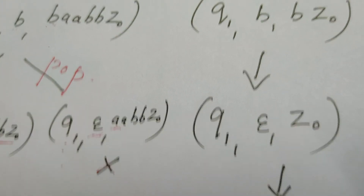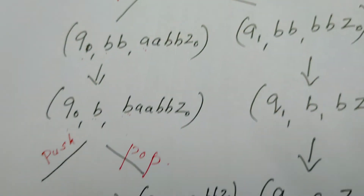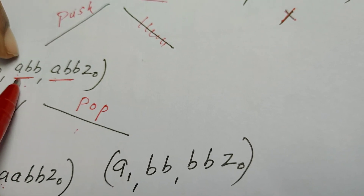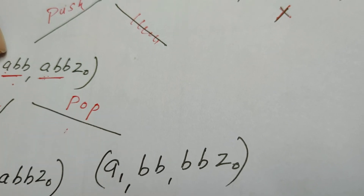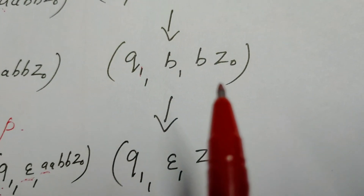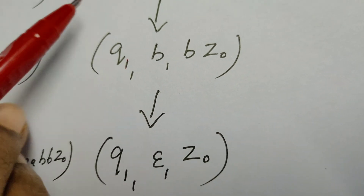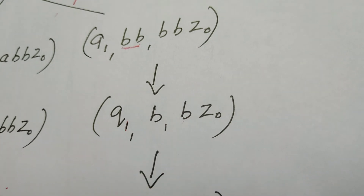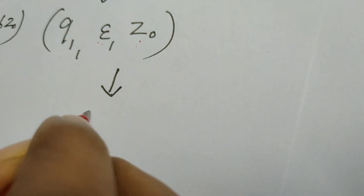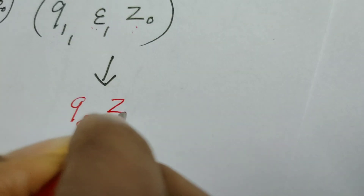All those options went wrong, so the PDA explores the pop option from the earlier branch. From Q1 it pops A — A is available at the top so it pops, and the remaining string is BB. Once in Q1, the PDA continues to pop all symbols it reads. When it reads B with B at the top, it pops and stays in Q1. It reaches the end of the string with epsilon remaining and an empty stack, so the PDA enters state Q2 retaining Z0, and the string is accepted.